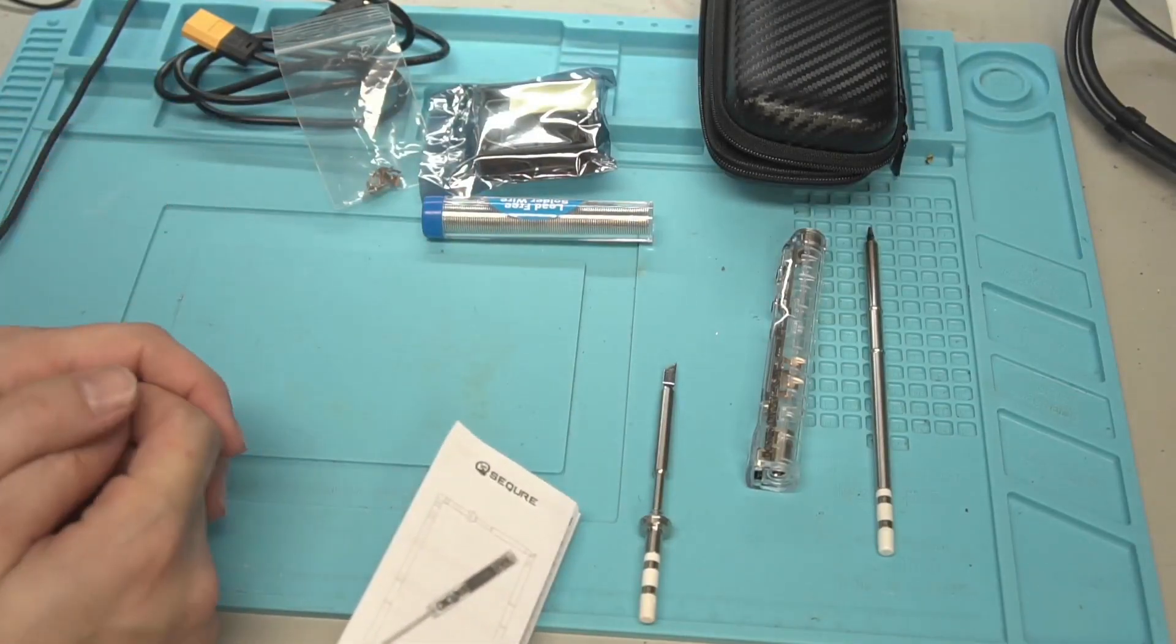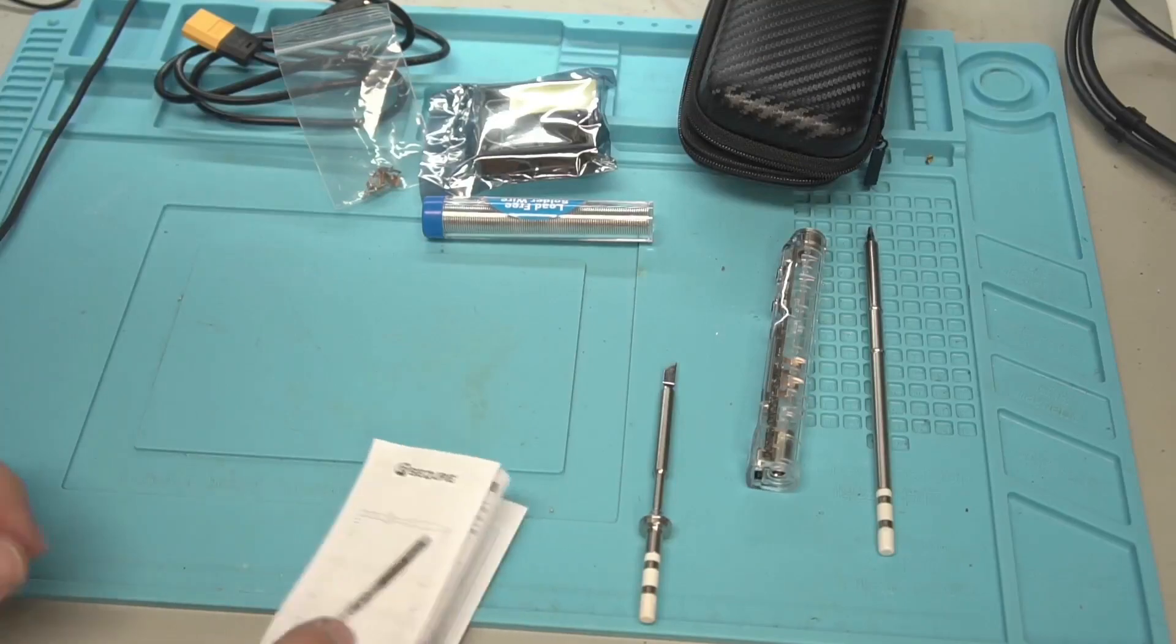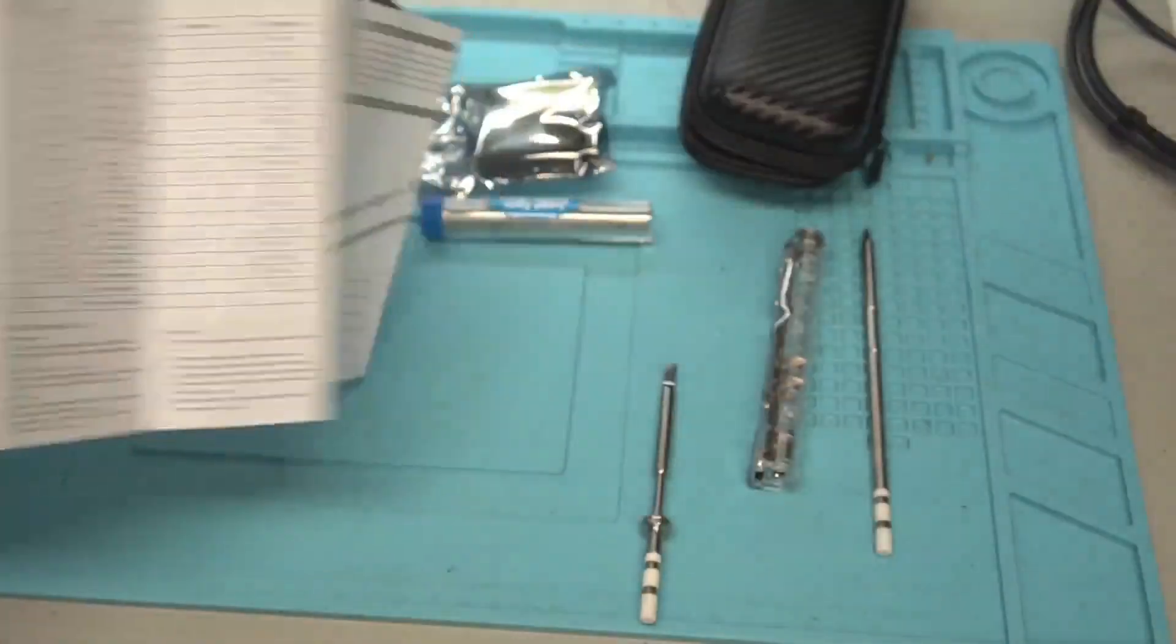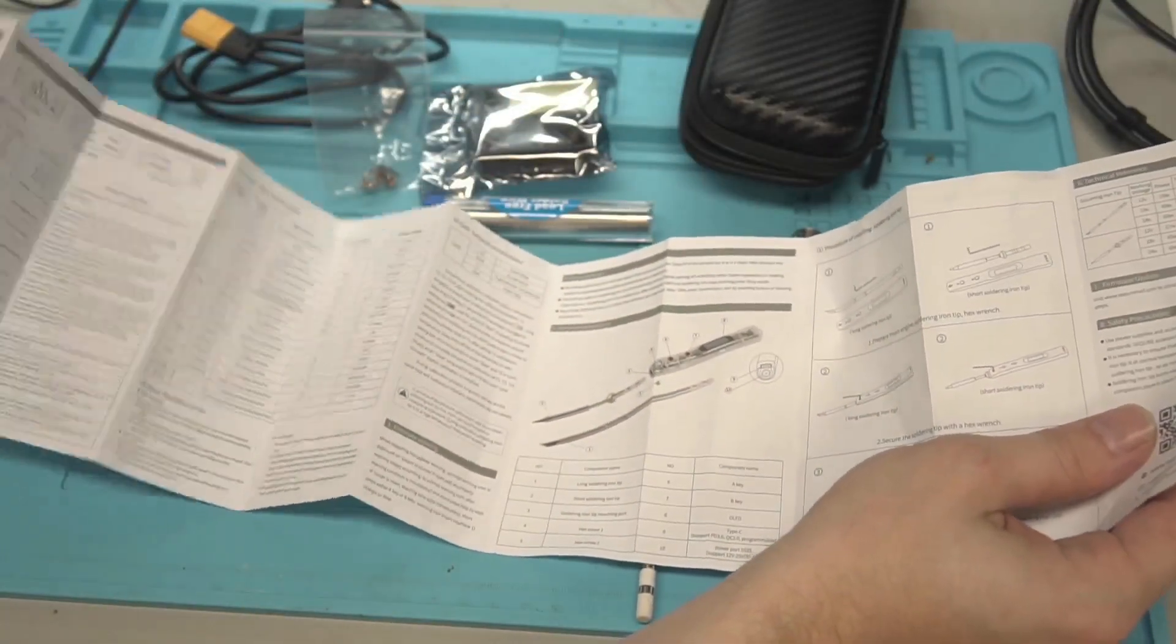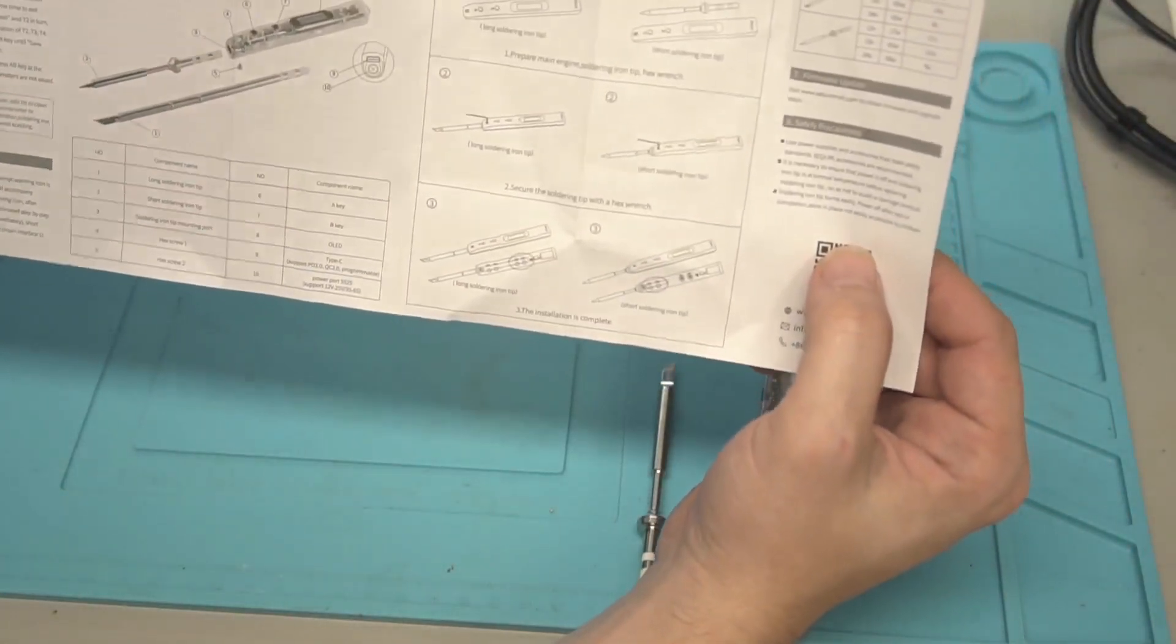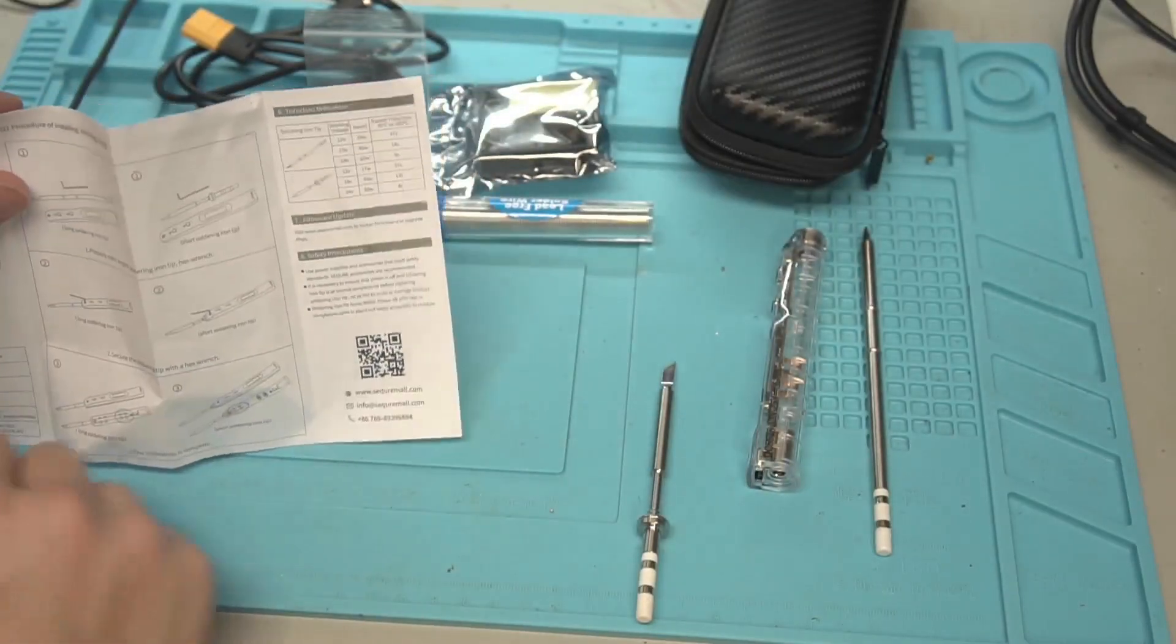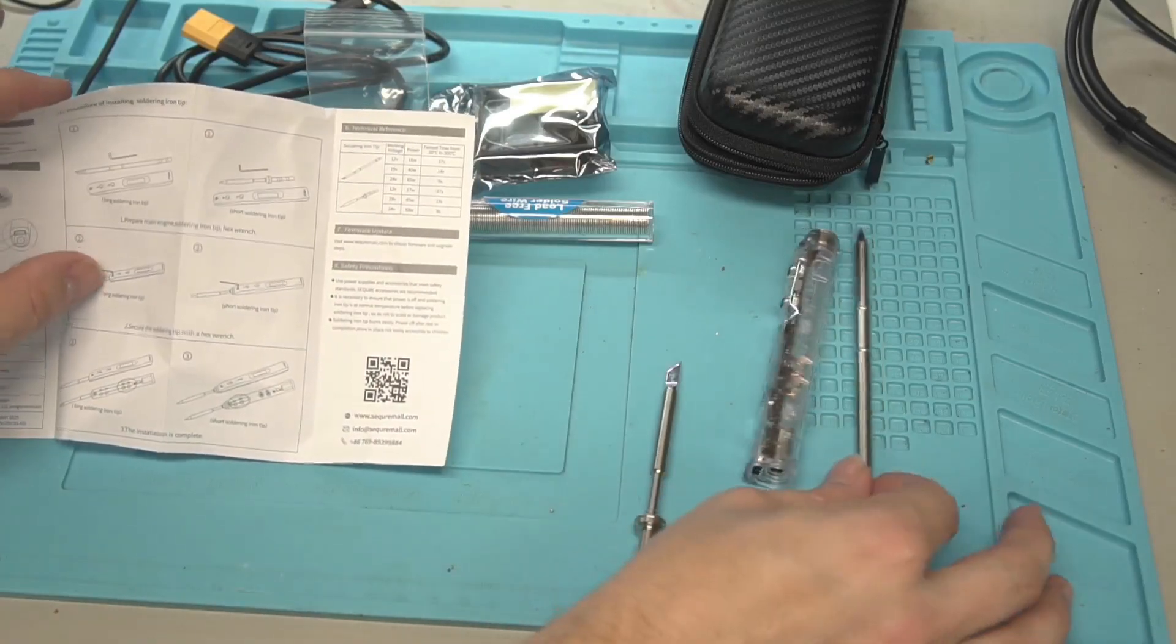I think I may have got a different package than Jeff did because I don't believe his came with that. So in our manual, we have instructions that are in English on the other side. It gives us a good idea of what all the different messages mean on there, and mostly just some safety warnings.